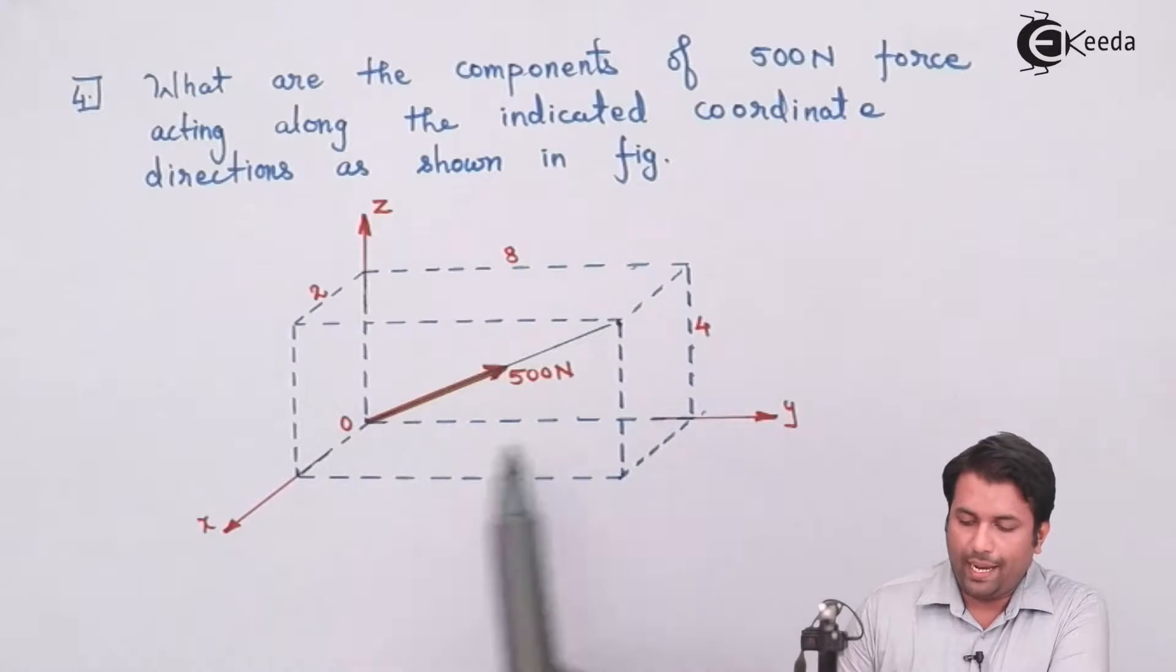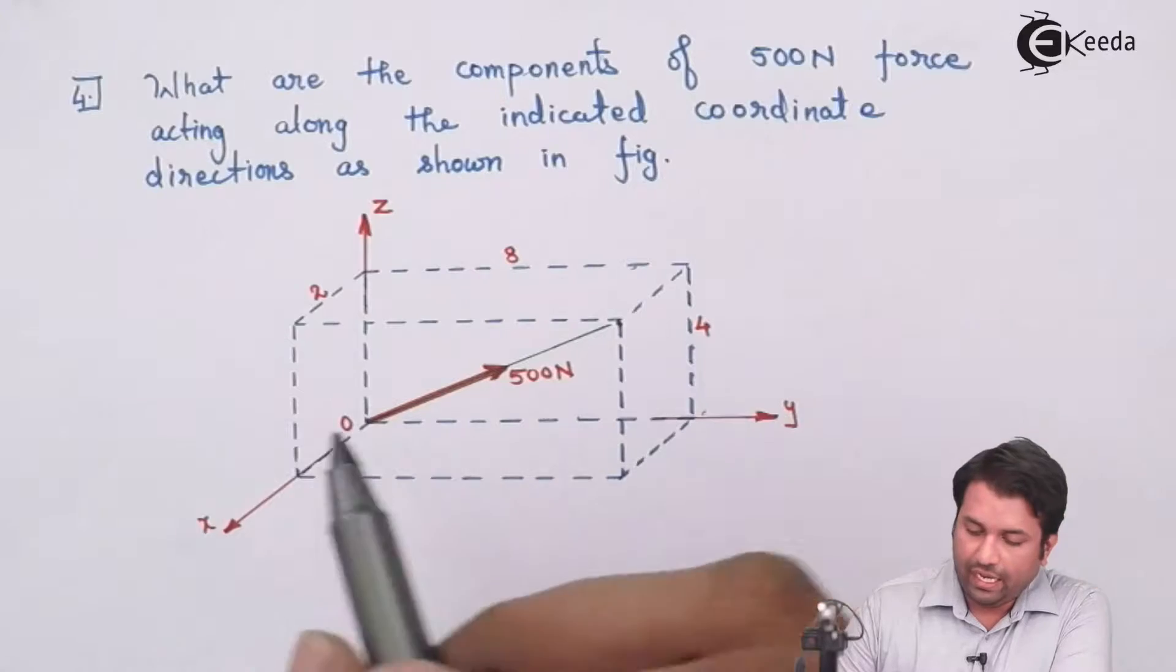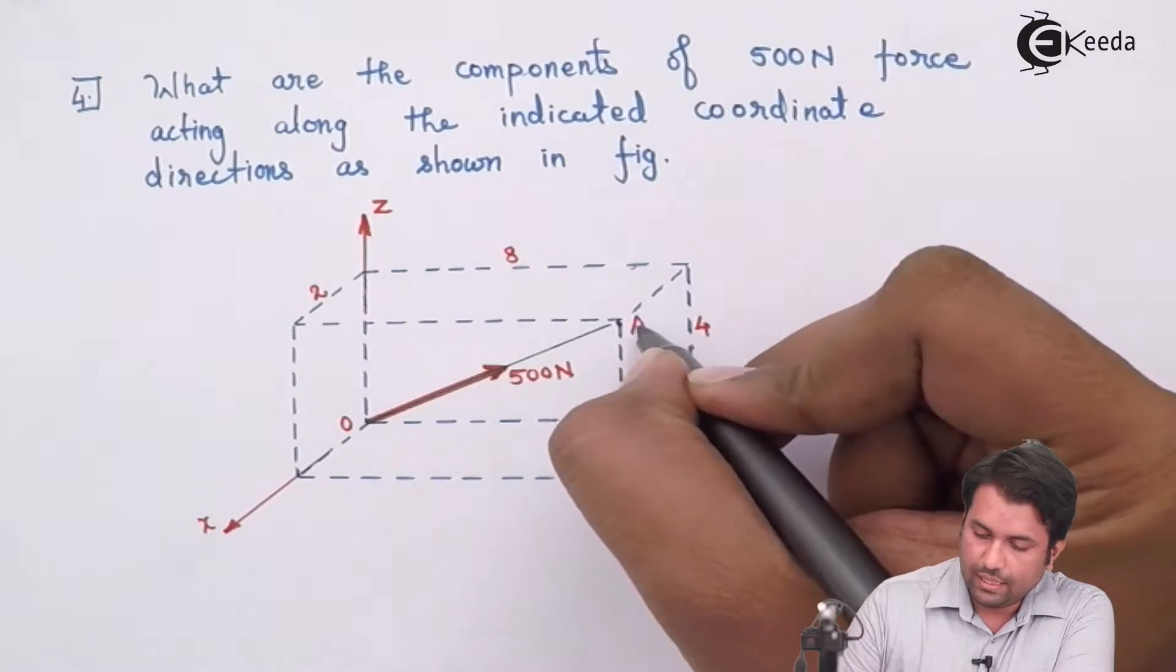I know this is the X, Y and Z axis so I can easily find out the coordinates. Just in case, I'll name this origin as O and I'll call this point as A.